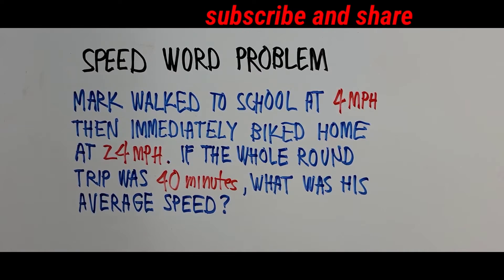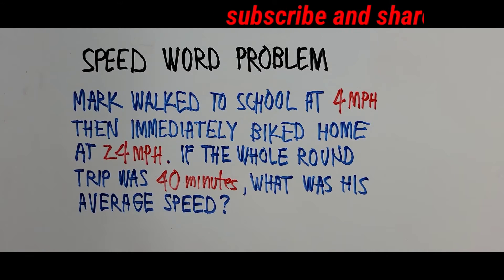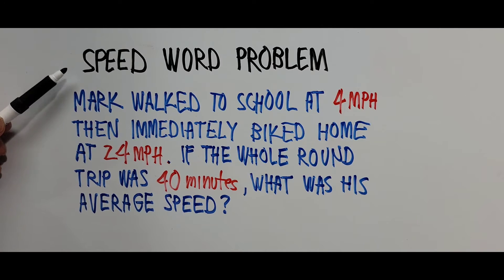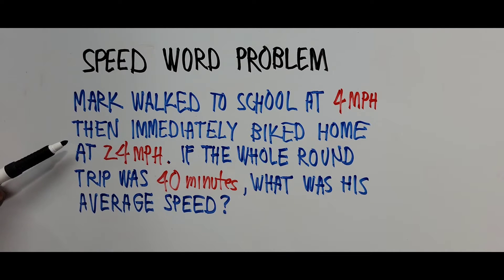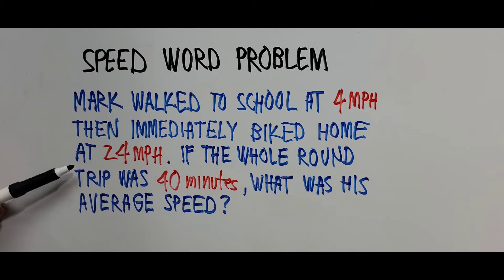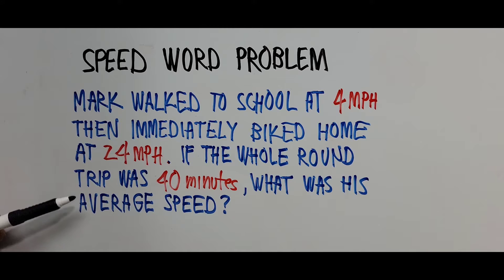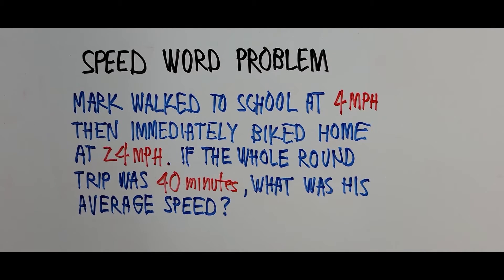Good morning everyone. Magandang umaga po sa ating lahat. It's another day and we have an algebra speed word problem. It goes this way: Mark walked to school at 4 miles an hour, then immediately biked home at 24 miles an hour. If the whole round trip was 40 minutes, what was his average speed? Now let's start analyzing the problem.